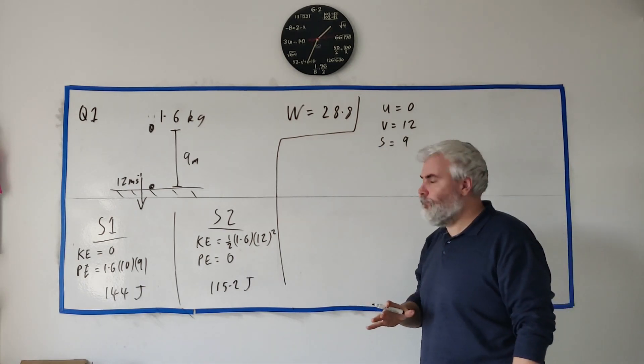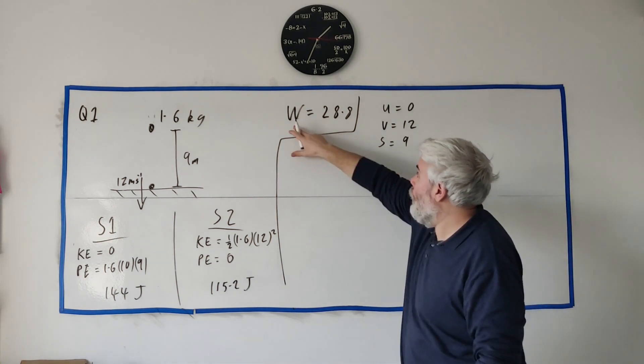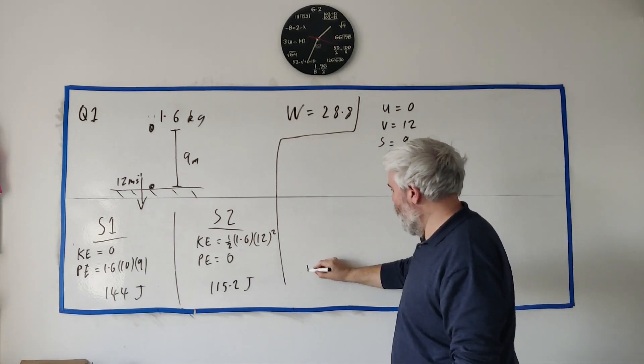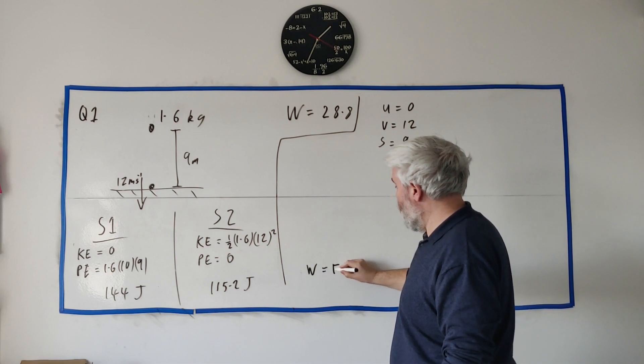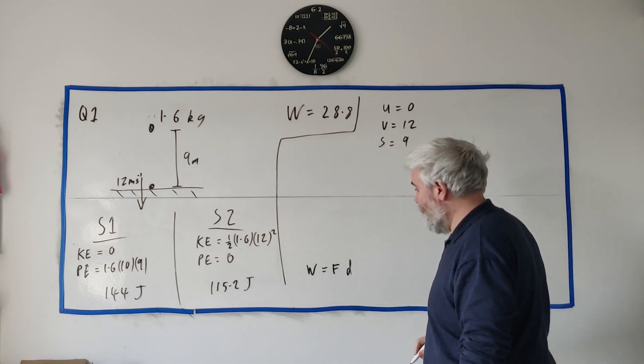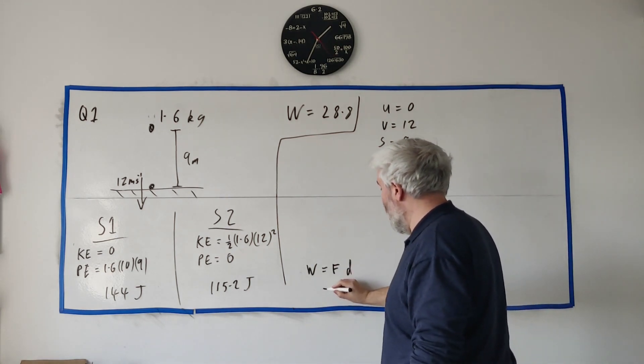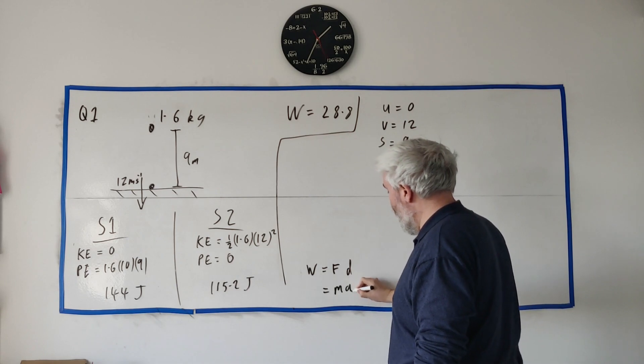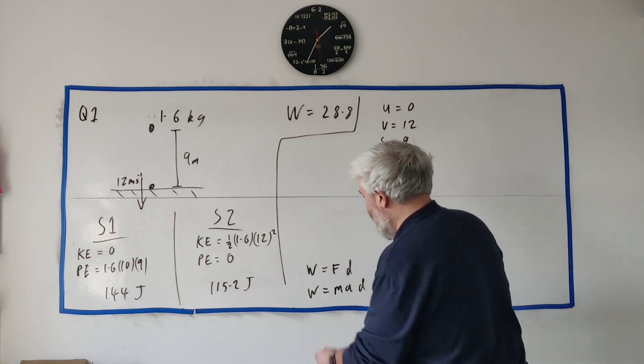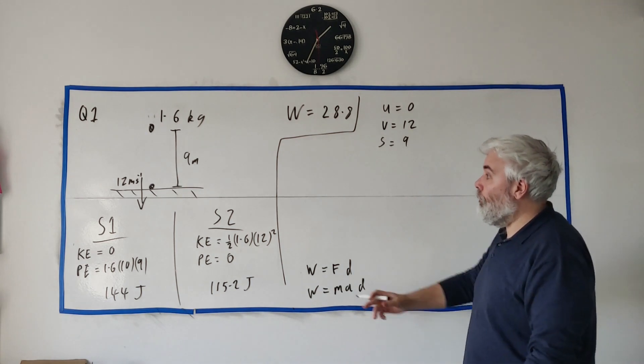We would like to get work. This is the trick this way - it might not be clear what we need here. Work can be written as force times distance and force can be written as m times a times distance.